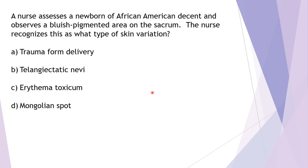Question nine: a nurse assessing a newborn of African-American descent observes a bluish pigmented area on the sacrum. The nurse recognizes this as: A) trauma from delivery, B) telangiectatic nevi (stork bites), C) erythema toxicum, or D) Mongolian spots. Mongolian spots are more common in babies with darker complexions — a bluish pigmented area typically over the sacrum, sometimes the upper back, that can look like bruising but is a normal finding. Answer is D.